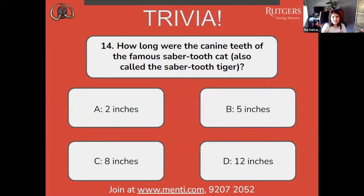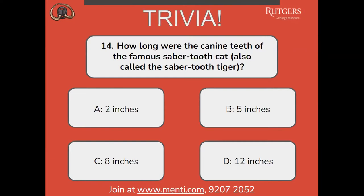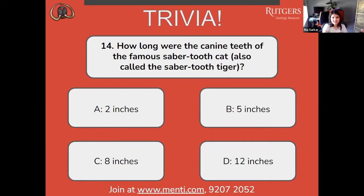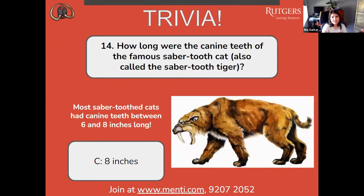Number fourteen: how long were the canine teeth of the famous saber-toothed cat, also called the saber-toothed tiger? Was it A, 2 inches; B, 5 inches; C, 8 inches; or D, 12 inches? The correct answer is C, 8 inches. Most saber-toothed cats had canine teeth between 6 and 8 inches long.